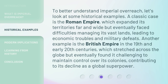To better understand imperial overreach, let's look at some historical examples. A classic case is the Roman Empire, which expanded its territories far and wide but eventually faced difficulties managing its vast lands, leading to economic troubles and military defeats. Another example is the British Empire in the 19th and early 20th centuries, which stretched across the globe but eventually found it challenging to maintain control over its colonies, contributing to its decline as a global superpower.